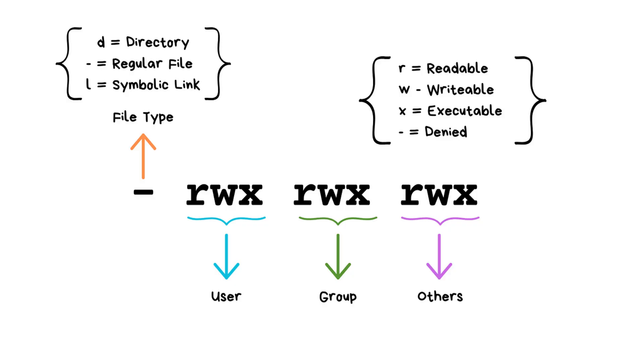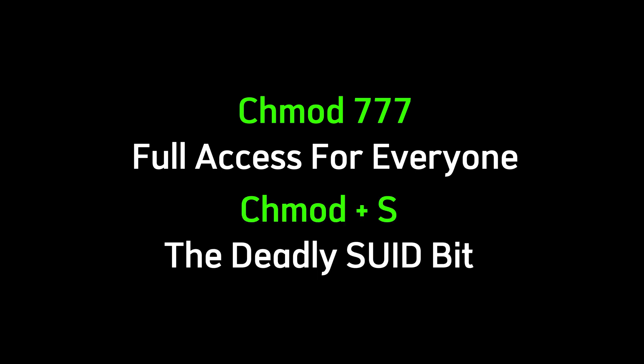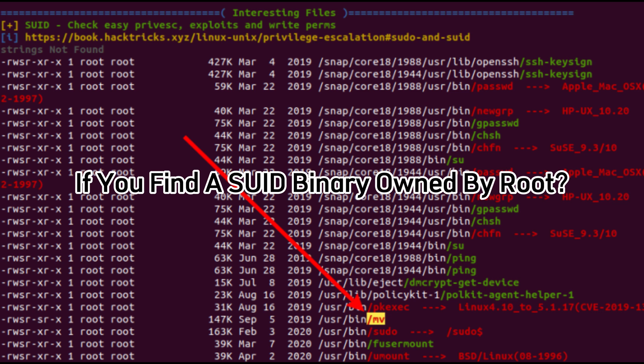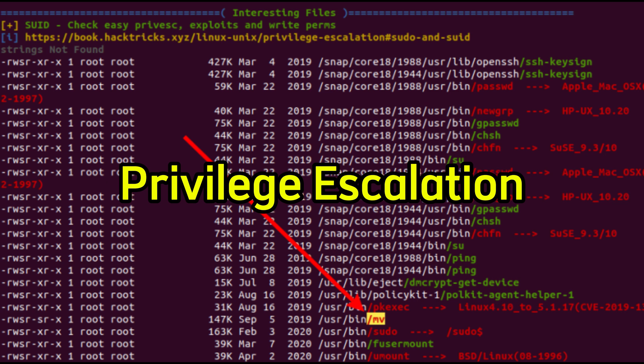But structure alone isn't enough — you need access. That's where permissions come in. Every file in Linux has three levels of permission: owner, group, and others. Each level controls three actions: read, write, execute. Want to break privilege barriers? You learn the numbers. chmod 777 — full access for everyone. chmod +s — the deadly SUID bit. If you find a SUID binary owned by root, that's your elevator to root shell. This is how real privilege escalation begins — not with tools, but with understanding.